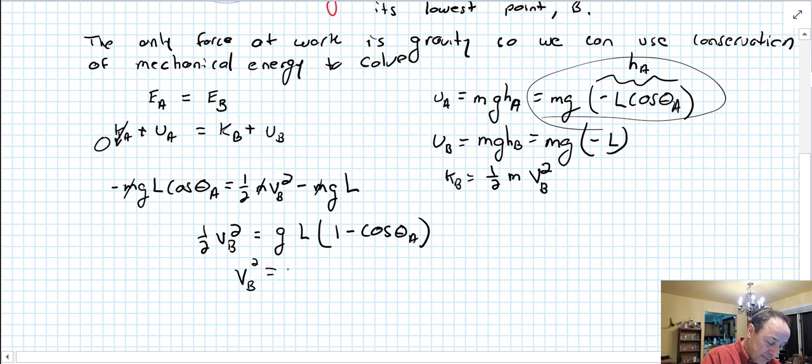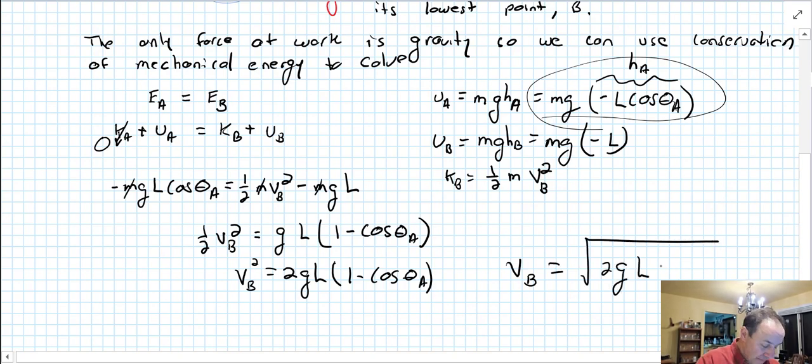Velocity of B squared equals 2gl times 1 minus cosine theta A. So v_B, the velocity of B, just is the square root of 2gl (1 minus cosine theta A).